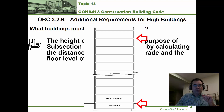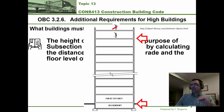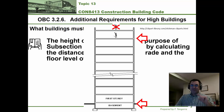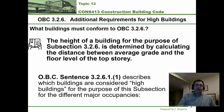Notice that it doesn't go all the way to the roof — it goes to the highest floor level. That's because people occupy up to the highest floor, not the roof. So it's that vertical distance from average grade to the top floor that determines whether a building is high. Under clause 3.2.6.1.1, we're going to see how the building code actually describes high buildings.